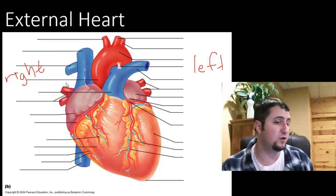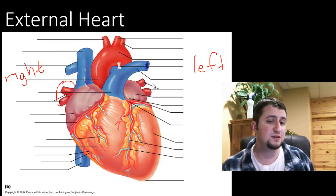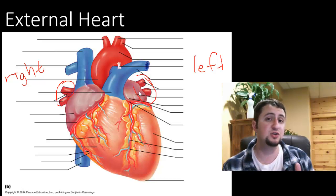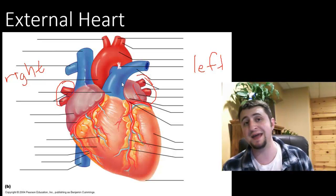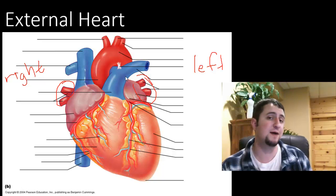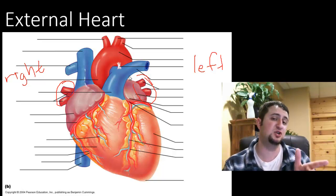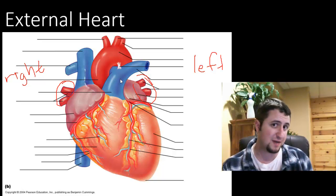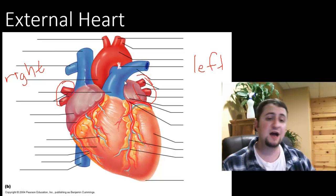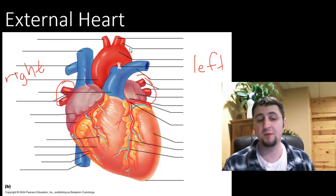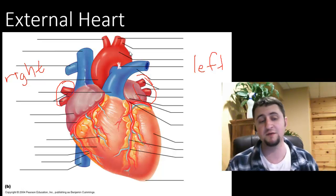But what's kind of weird is right here — these two red things are actually veins. They are the only veins in your entire body that are oxygenated. We will talk about that in the next video. They are oxygenated because they actually come from the lungs themselves.